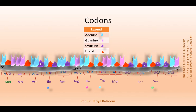Codons are the nucleotide sequences present on the messenger RNA. These sequences are always written from the 5' towards the 3' end. The four nucleotide bases — adenine, guanine, cytosine, and uracil — are used to produce the three-base codons.